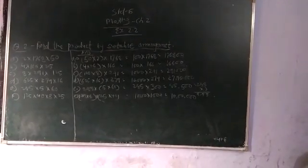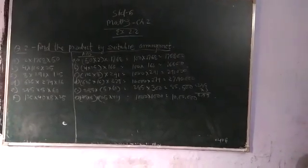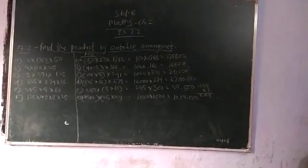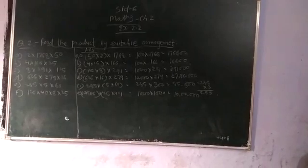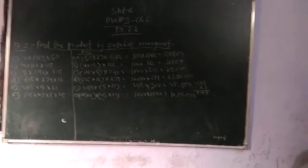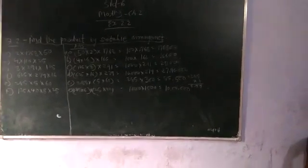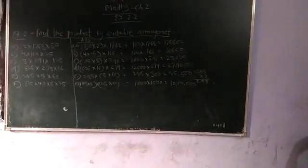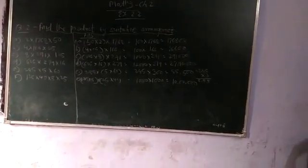The third is C: 8 multiply 291 multiply 125. So, 125 multiply 8 equals 1,000. Then 1,000 multiply 291. So we will get 291 with three zeros, which is 291,000.